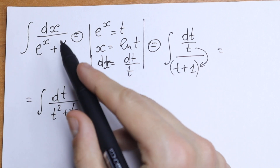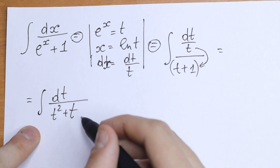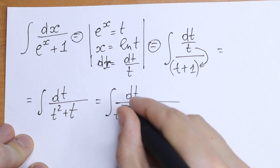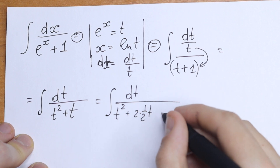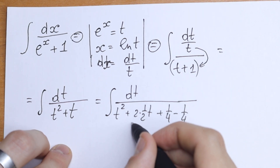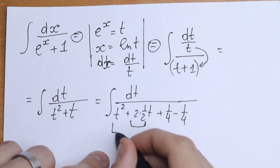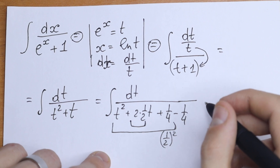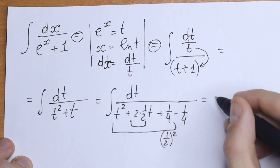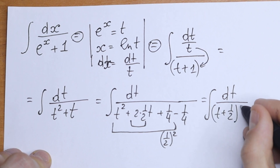Now we need to solve this integral in terms of t. I want to do a little trick here. We can add 1/4 and subtract 1/4 in our denominator. So we will have dt over t squared plus 2 times one-half times t, plus 1/4, minus 1/4. This uses the formula where 1/4 is one-half to the second power. So in the denominator we will have t plus one-half, squared, minus 1/4.